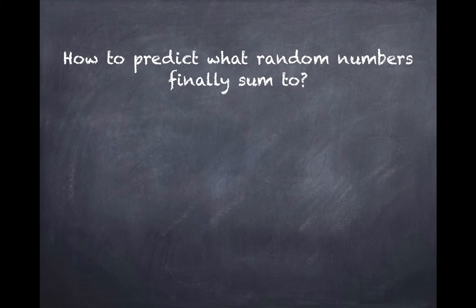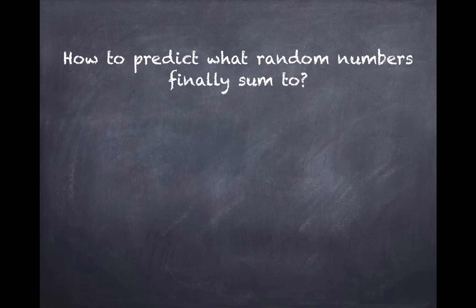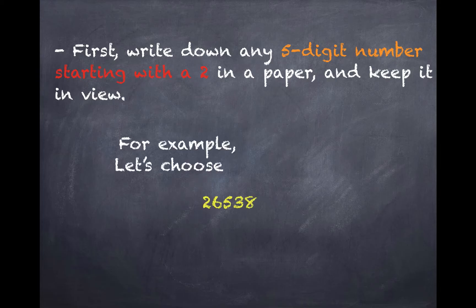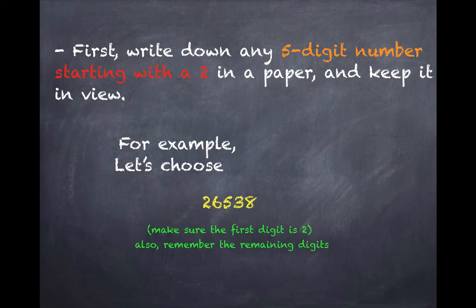So how to predict what random numbers will finally sum to? It's actually pretty simple. So first, we want to choose a five-digit number starting with the two and write it on a piece of paper and keep it in view of the audience. Let's say we choose 26538 for no reason whatsoever. But we need to make sure that the first digit is 2, and also we need to remember the last four, which in this case is 6538.